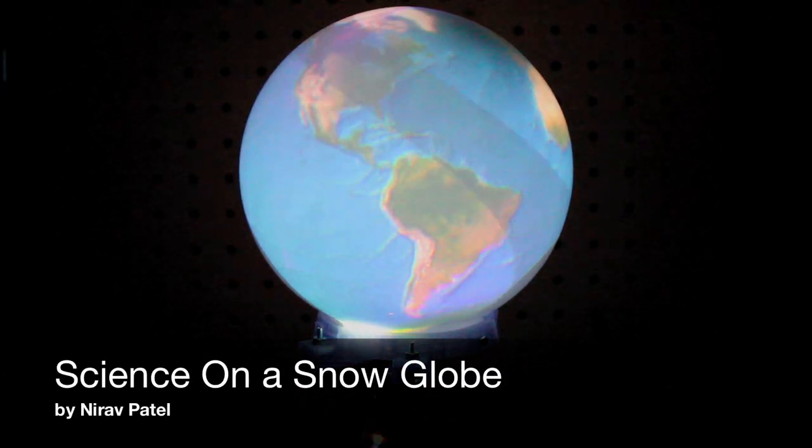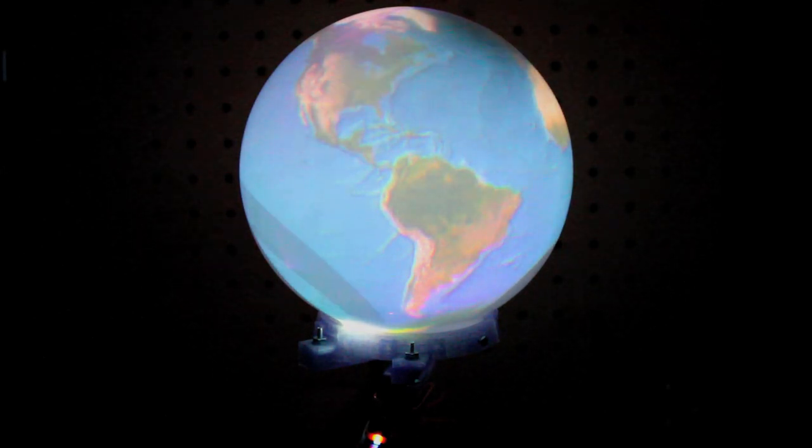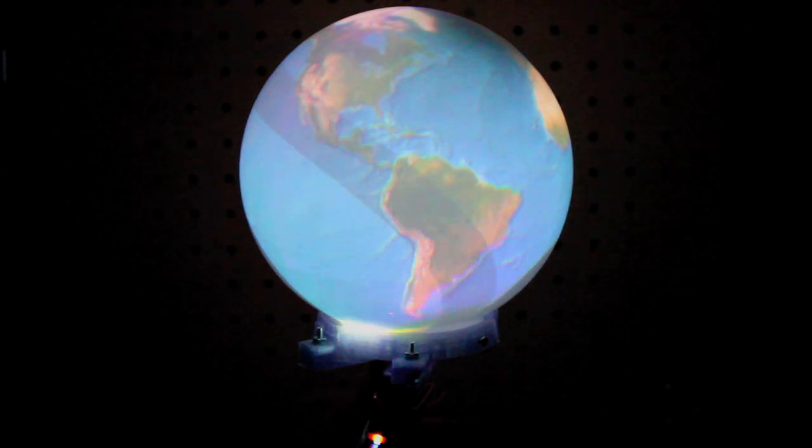Science on Sphere is a project by NOAA to display their planetary data sets on a six-foot-diameter sphere. It's often found in science centers and museums.